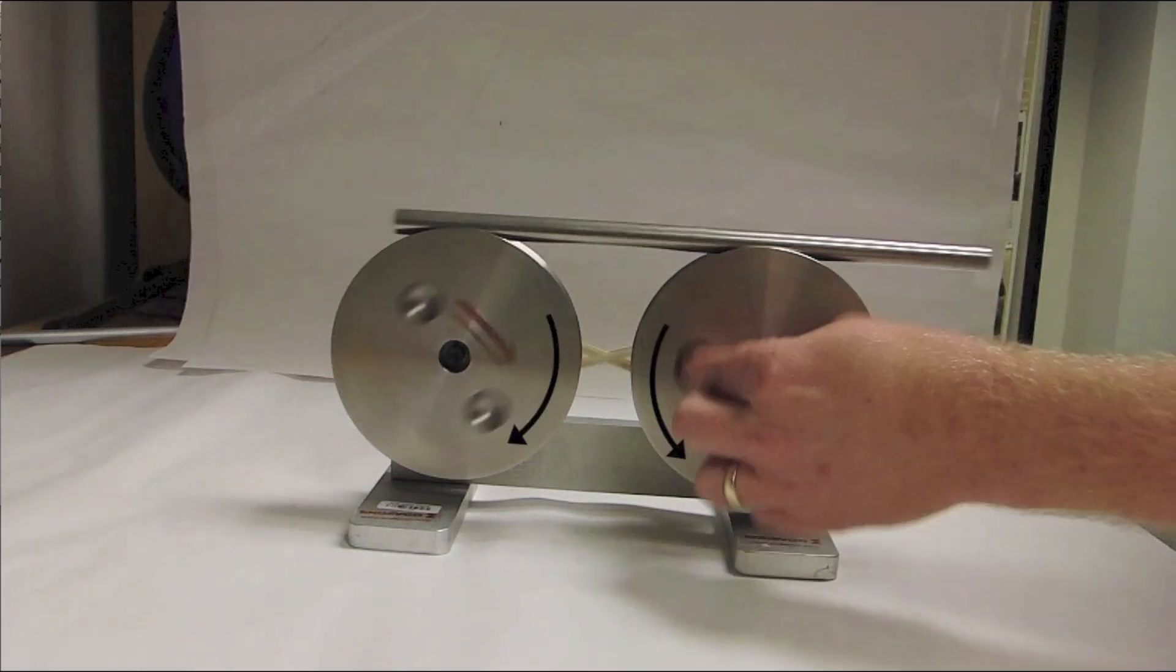But what happens if the system is slightly displaced from equilibrium? The weight still pulls the rod down, but now it's not at the center of the system anymore. As a result, the two normal forces are no longer equal in magnitude. They still add up to the same total as the weight, but the one on the right is bigger.